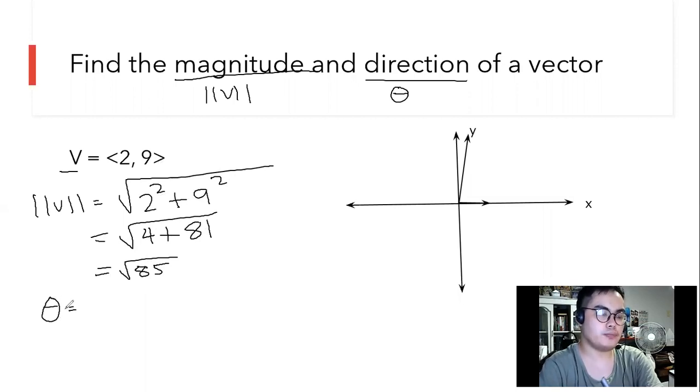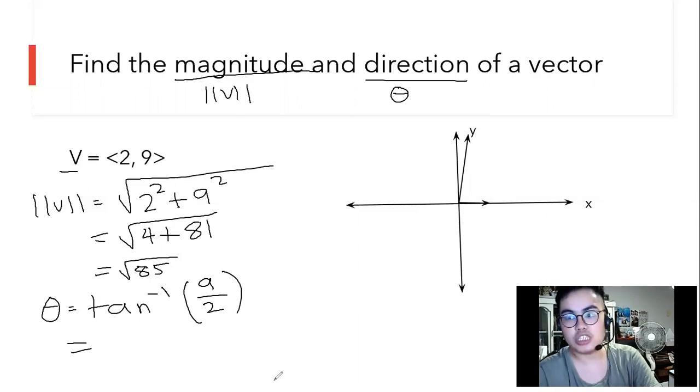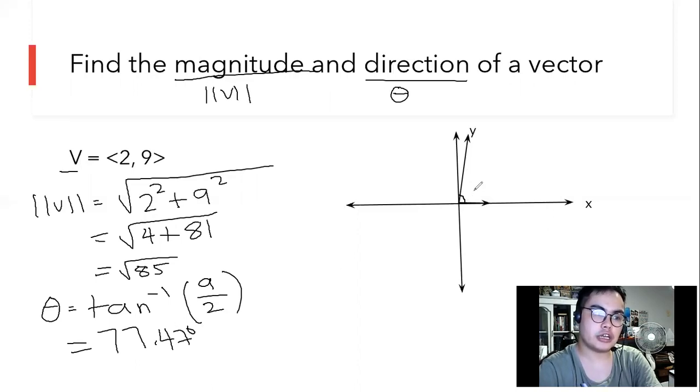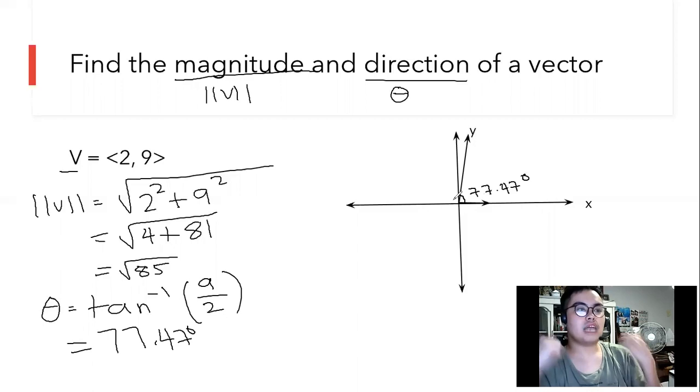When we say the direction, we're going to find the inverse of tangent of 9 over 2. What we're going to do is use the scientific calculator to perform this operation so we will no longer be having a hard time. 9 divided by 2 is 4.5. We go to the shift mode to press the tangent. Approximately, it is 77.47 degrees. That is how we find the magnitude and the direction of the vector.